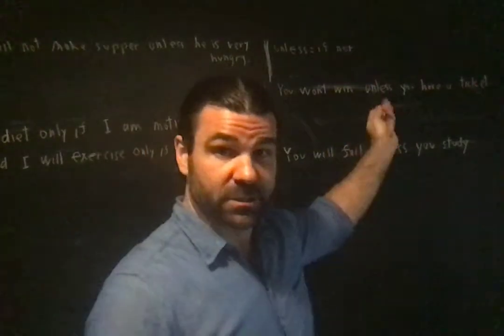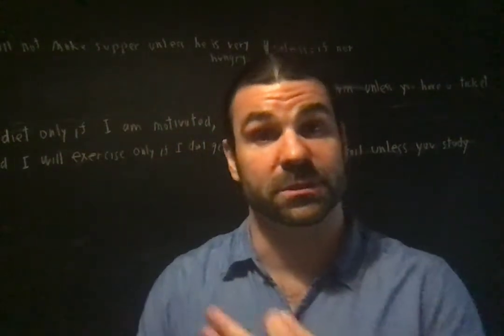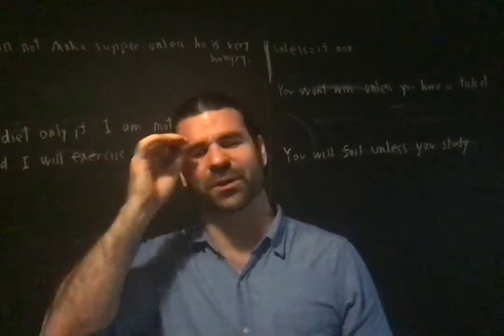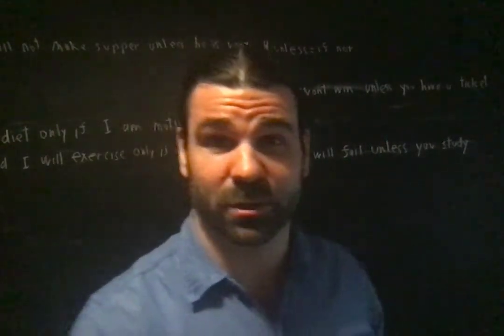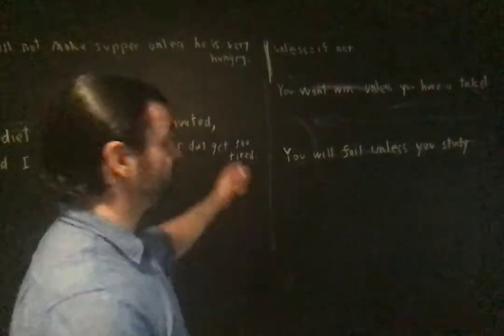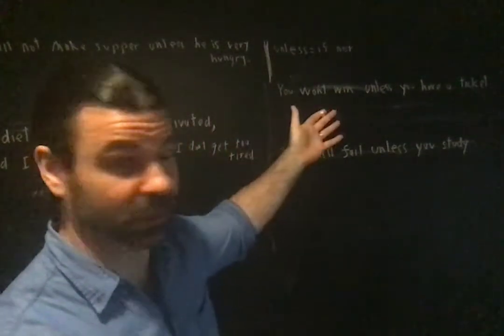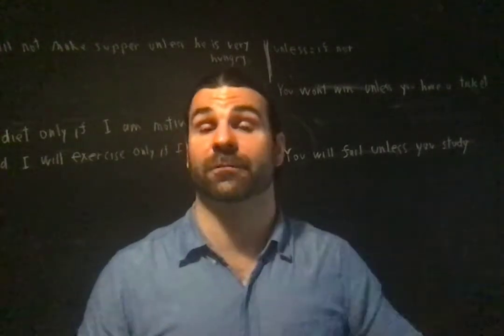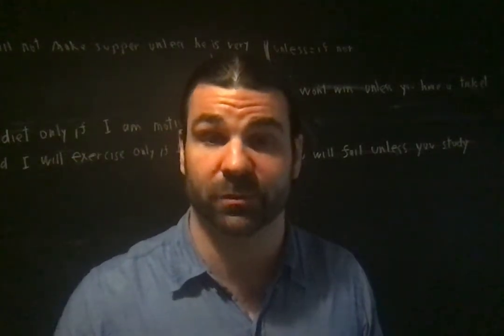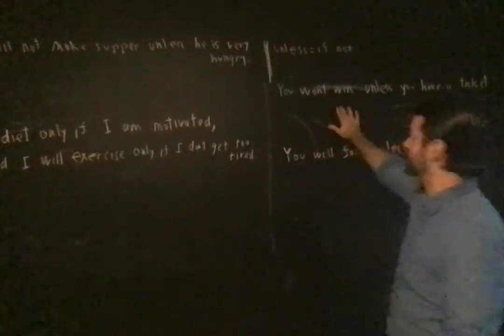The rule is: 'unless' translates as 'if not.' Now, if you're in the exam and you can't quite remember that — you know 'unless' gets translated to something but can't remember if it's a wedge, a dot, or a hook — you'll be able to use this lottery example. The sentence 'you won't win the lottery unless you have a ticket' is pretty clear in meaning, and you should be able to derive its correct logical form from your understanding of the sentence. That will supply for you the rule that 'unless' is equivalent to 'if not.'